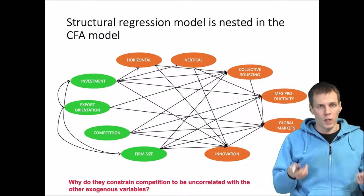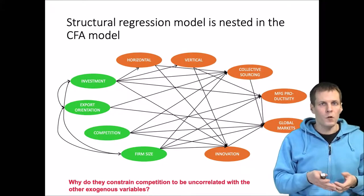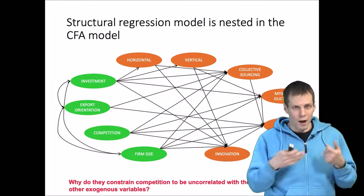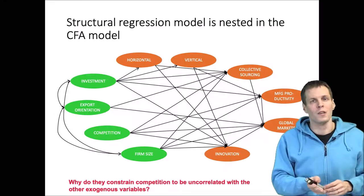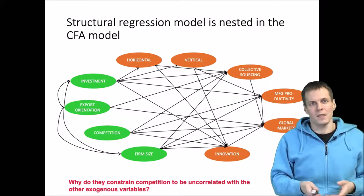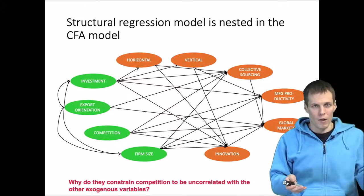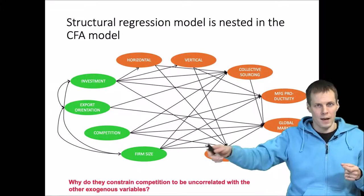You have to remember to free the correlations. I've seen a few papers that have these control variables that are constrained to be uncorrelated with interesting variables. In that case, you wouldn't do any controlling because a control variable needs to be correlated with the interesting variables and explain the dependent variable.